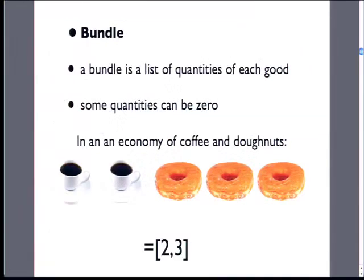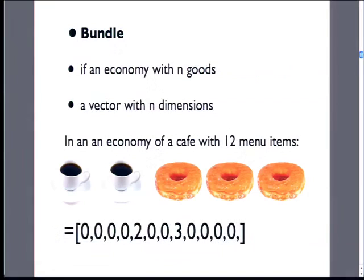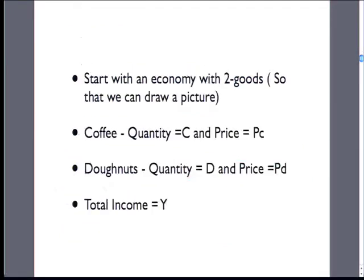So, back to the world of coffee and donuts. Our bundle is the quantities of goods we're going to consume; some quantities can be zero. A bundle of two cups of coffee and three donuts is written as (2, 3). If we had n possible choices in the cafe, there's a large vector with many zeros, but we're still getting two cups of coffee and three donuts. We have an economy with two goods to draw pictures: quantity and price of cups of coffee, quantity and price of donuts, and income — five things we work with to draw our graph.